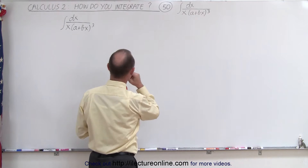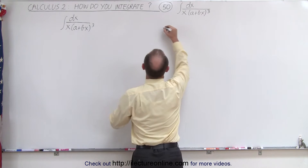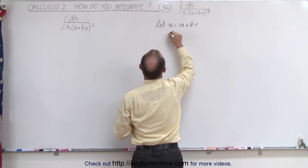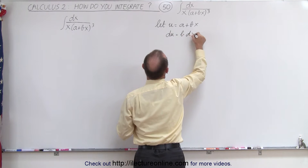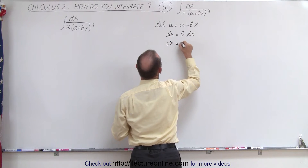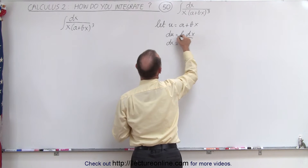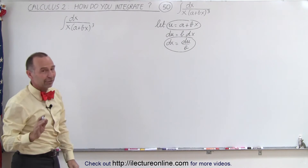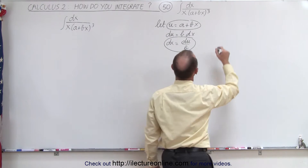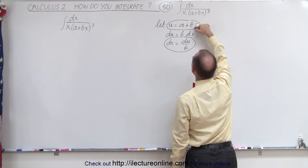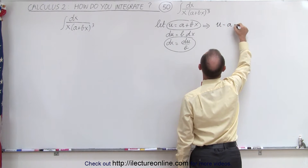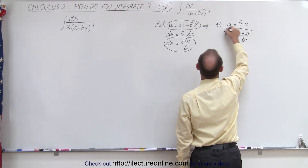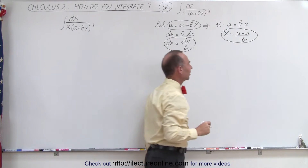So first of all, we're going to make some substitutions. We're going to let u equal a plus bx. That means du is equal to b dx, or dx is equal to du over b. And we're going to need this substitution in our integral. But then we have one more — we need to take care of x. To do that, we're going to take this equation and write u minus a equals bx, or x is equal to u minus a divided by b. And we can also substitute this for dx in the integral sign.